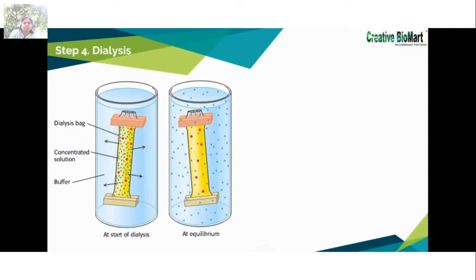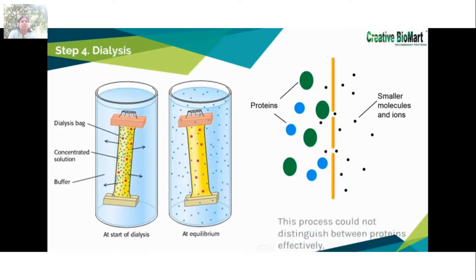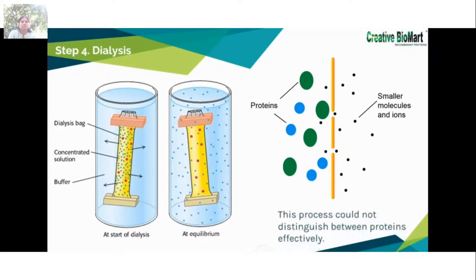Dialysis can be used to remove the salt from the previous step. Proteins can be separated from small molecules by dialysis through a semi-permeable membrane, such as a cellulose membrane with pores. Proteins have greater dimensions than the pore diameter and are retained inside the dialysis bag, whereas smaller molecules and ions traverse outside through the pores. However, this process cannot distinguish effectively between proteins.